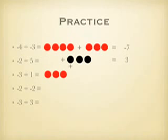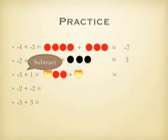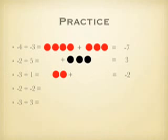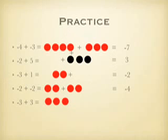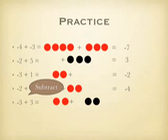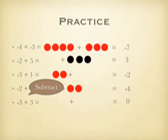And then negative 3 plus positive 1 — again I'm going to subtract since I have to take away some pairs — so I'm going to be left with negative 2; I have 2 more negatives. Then negative 2 plus negative 2, I'm going to add these together, none of them cancel, so I end up with negative 4. And last but not least, negative 3 plus positive 3 — I have positives and negatives undoing each other, so they cancel, and I'm left with zero. We'll see you next time.